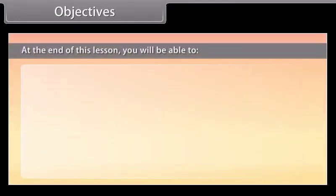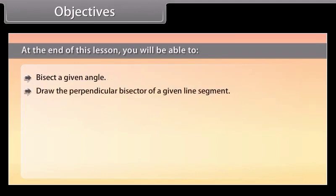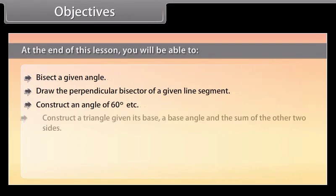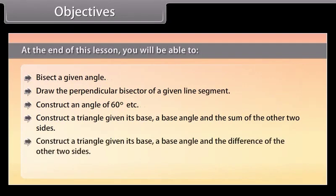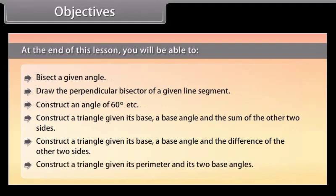At the end of this lesson you'll be able to: bisect a given angle; draw the perpendicular bisector of a given line segment; construct an angle of 60 degrees; construct a triangle given its base, a base angle and the sum of the two other sides; construct a triangle given its base, a base angle and the difference of the other two sides; and construct a triangle given its perimeter and its two base angles.